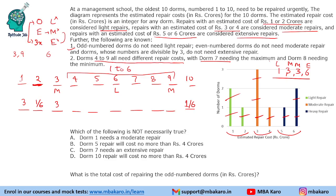DOM 7 needs the maximum repair cost, so DOM 7 needs 6 crores, and DOM 8 needs 1 crore. We are now left with values 2, 3, 4, and 5 for the remaining DOMs. DOM 6 needs light repair, so it gets 2 crores, leaving 3, 4, and 5 for DOMs 4, 5, and 9. DOM 5 and DOM 9 are odd — they cannot have light repair. DOM 4 is even — it cannot have moderate repair, so DOM 4 gets 5 crores. DOMs 5 and 9 take 3 and 4 in some order.